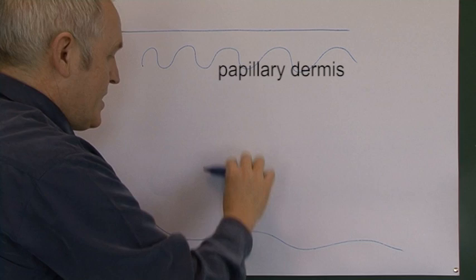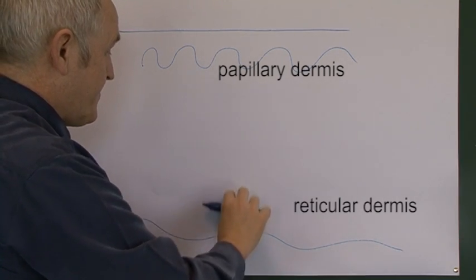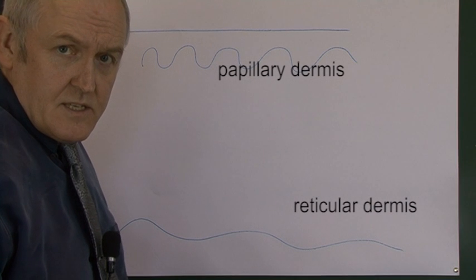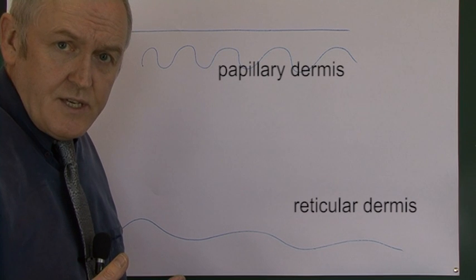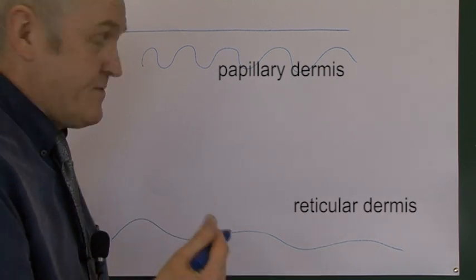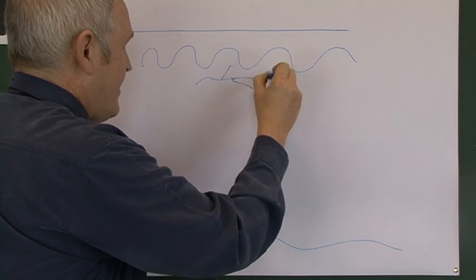So why are these layers so called? Well in the papillary region, in the more superficial part of the dermis, there are interconnected fibers of collagen.